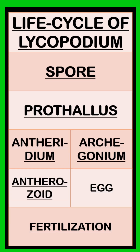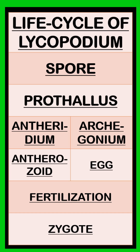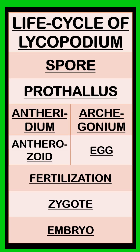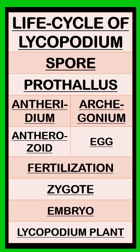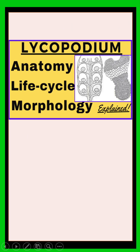The egg and antherozoid fuse to form the diploid zygote. The zygote develops into the embryo, which forms the new Lycopodium plant body.